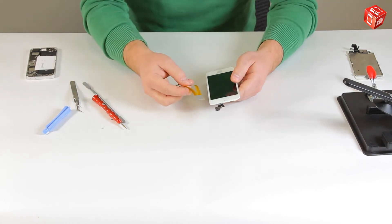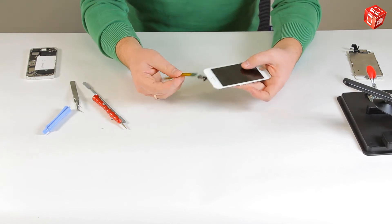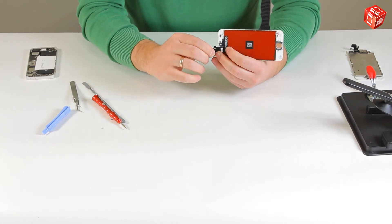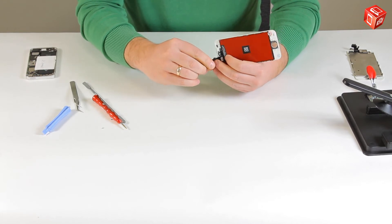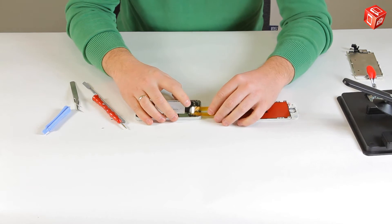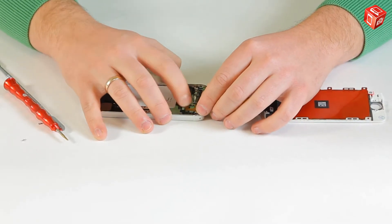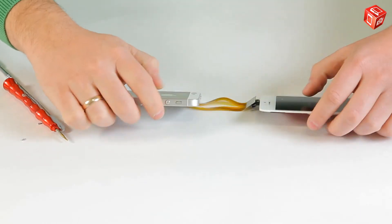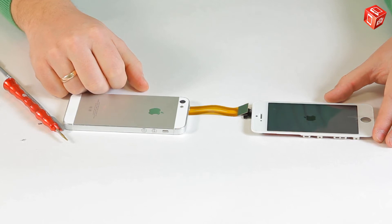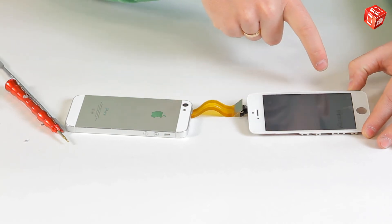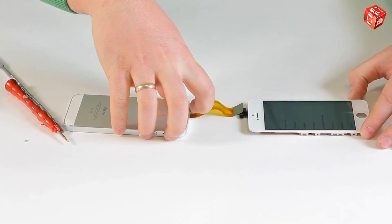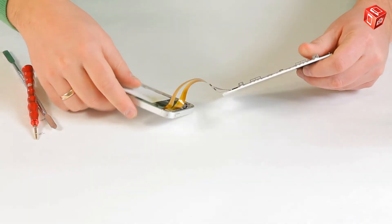A very convenient way to check the display module is to use a special flat cable for testing. Simply connect it to the display module and the phone. Turn on the phone and test the display and touch screen. After checking everything, disconnect the flat cable for testing from the display module and the phone.